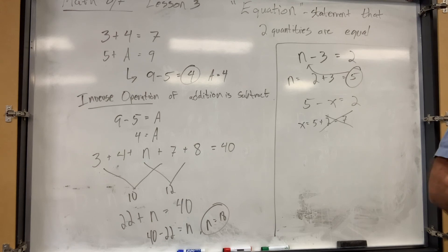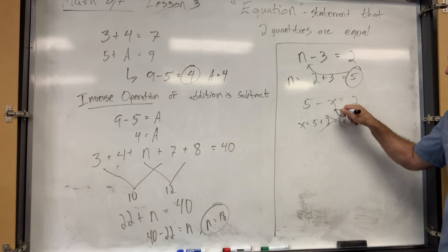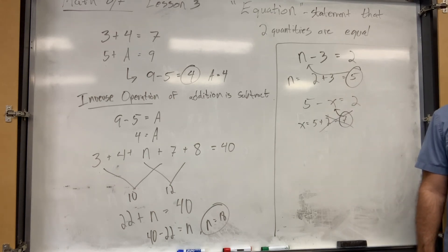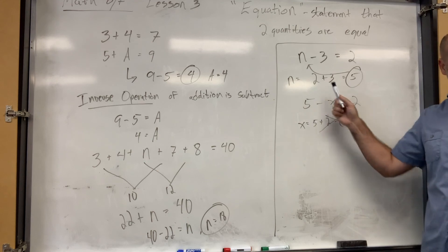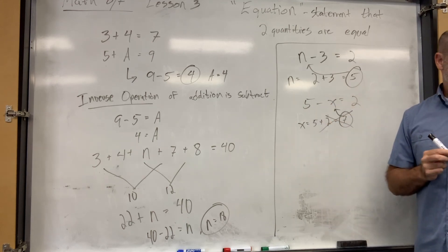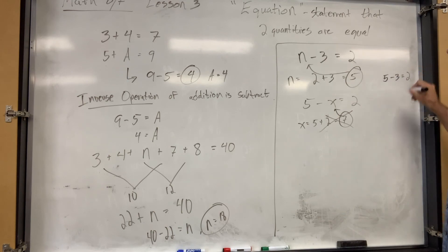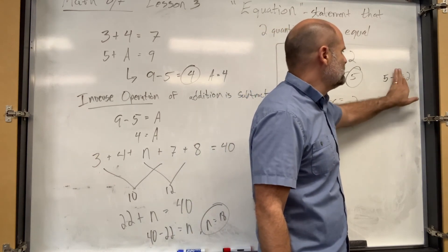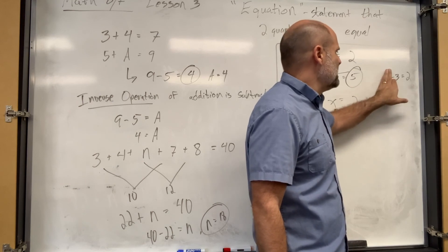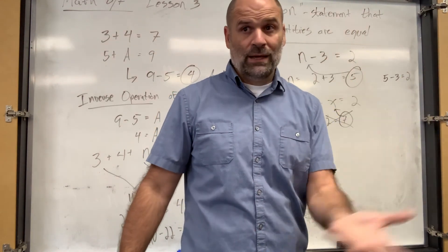So if it's not adding to get the missing number, it must be subtraction. You're either going to add or subtract to find the missing number. If you don't remember which one is which, just try both and see which one makes sense. You can always put an easy problem on the board, like 5 minus 3 equals 2. If you're missing the second number, it's another subtraction problem. If you're missing the first number, you just add.